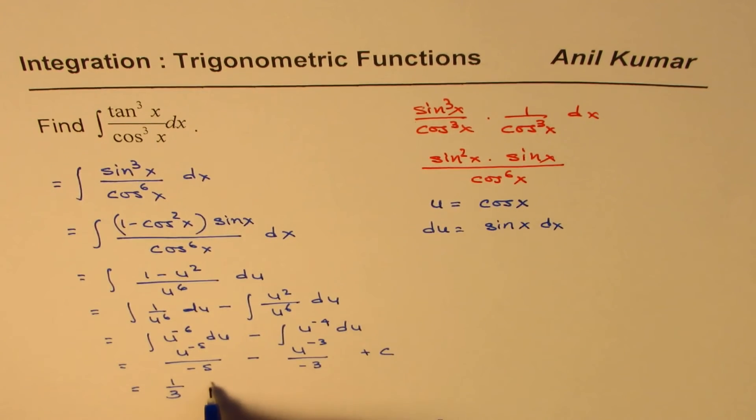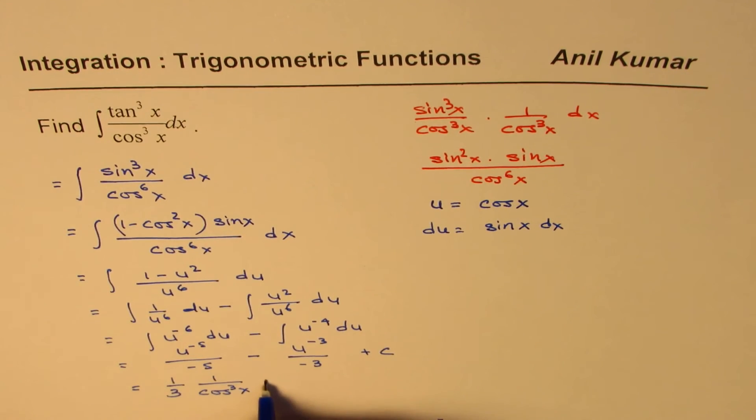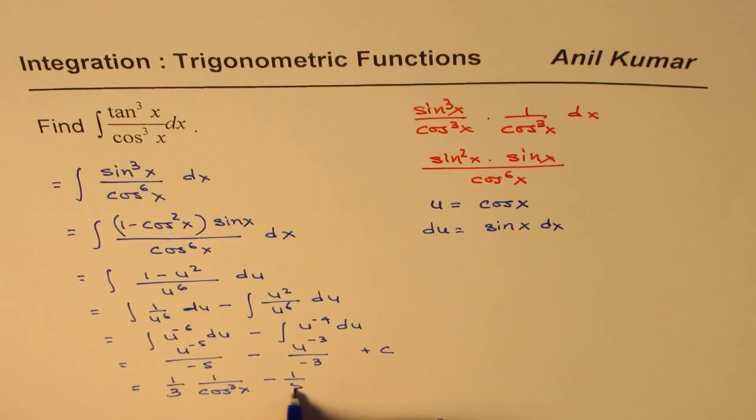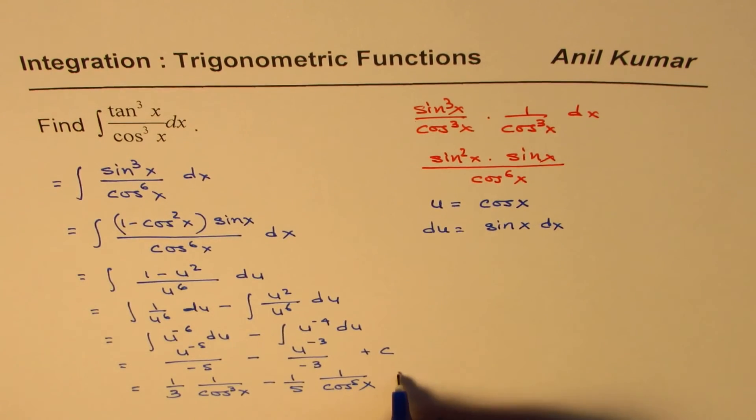And this is minus 1 over 5, and 1 over cos to the power of 5x, plus c.